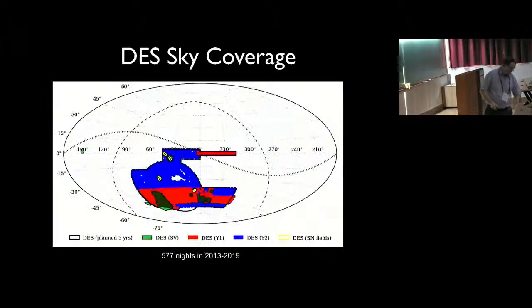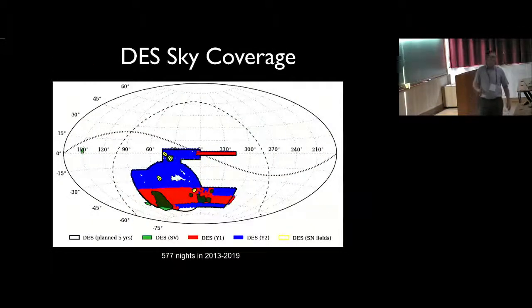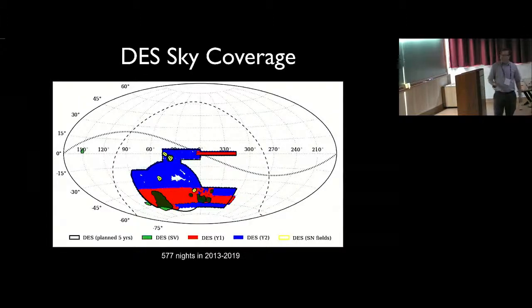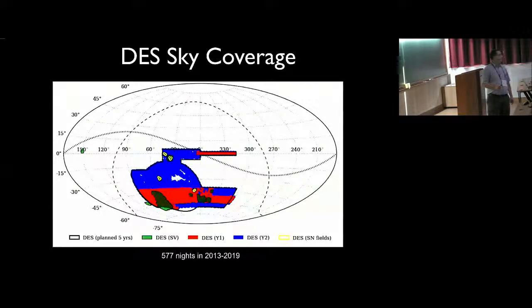So what will the survey eventually cover? As I said, it will cover these 5,000 square degrees in the south. This outside black line corresponds to the limit of the footprint of the survey. This is sometimes referred to as the tank, with the cannon being here.